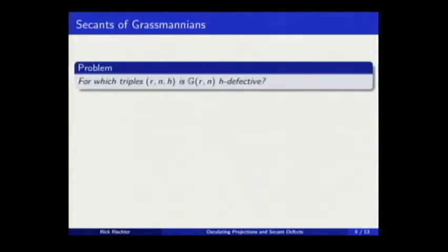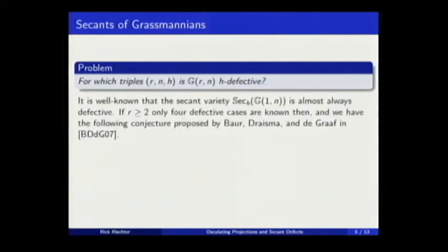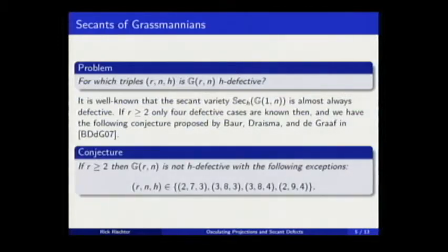So the question is for each triple R, n and h, is this Grassmannian h-defective? It's well known that the Grassmannian of lines in Pⁿ is almost always defective. And if R is at least two, there is some conjecture about which ones are defective. It's known for cases where this Grassmannian is defective, and the conjecture is these are the only ones.